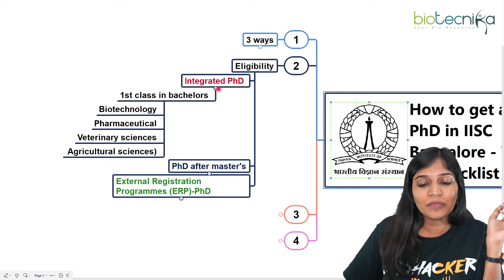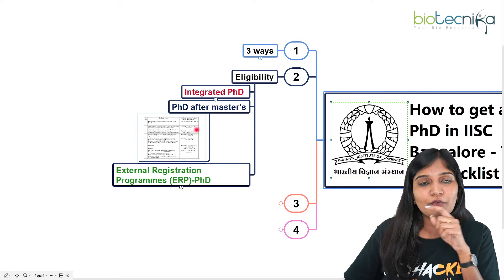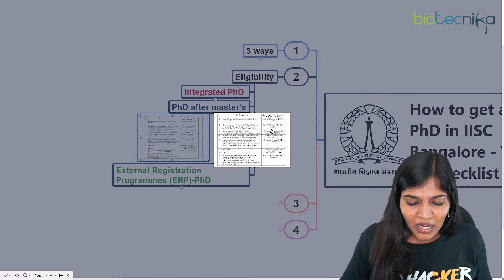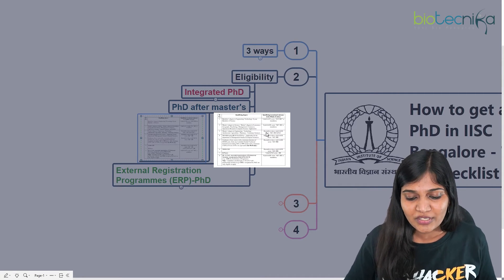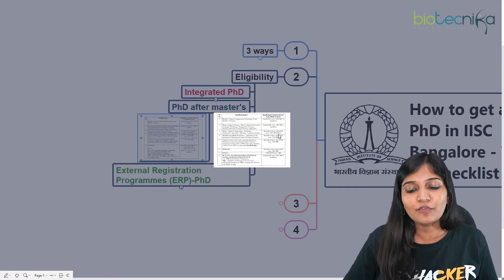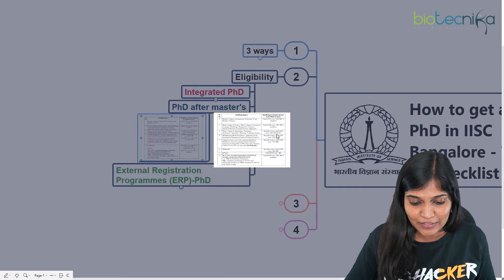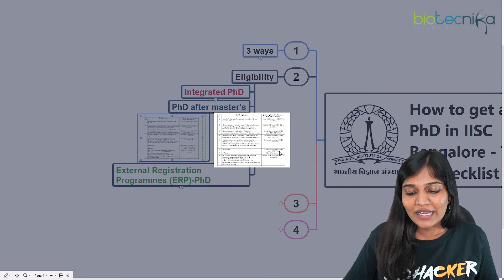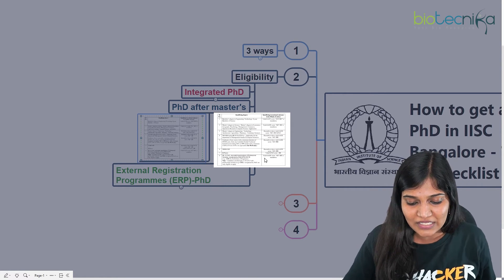For PhD after master's, if you are from Agriculture, Pharmacy, Veterinary Sciences, MSc, or M.Tech in Engineering, you need a valid GATE score, NET-JRF, or GPAT to be eligible for the interview. If you are from MBBS or MD, a GATE score or NET-JRF is desirable but not mandatory — you can go directly for the interview. B.Pharm students definitely need a valid GPAT score or JRF.